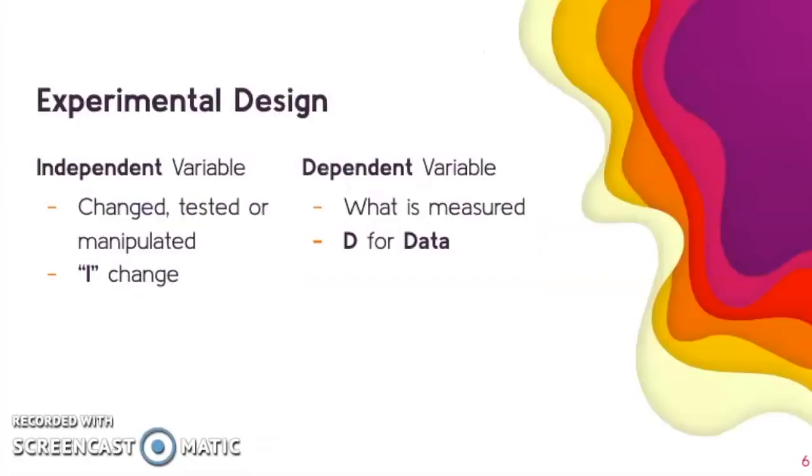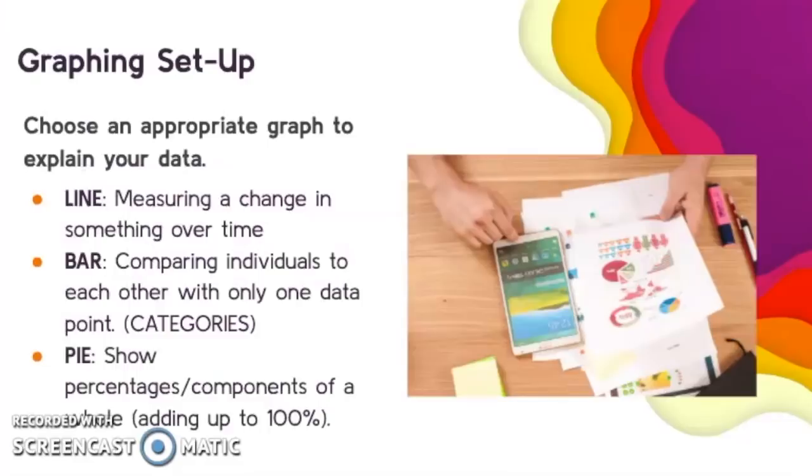Your independent variable is the thing that has changed or tested or manipulated. If you are the experimenter, think I for independent—what am I changing in the experiment? Your dependent variable is what is measured. Think about D for data, D for dependent. Where are you getting your data from? What are you measuring in your experiment?